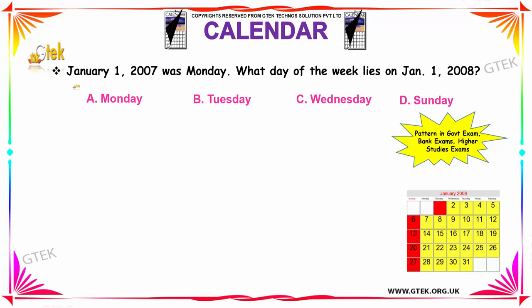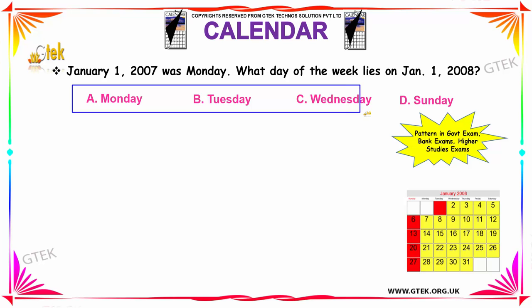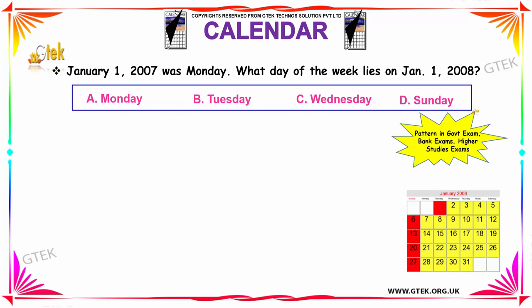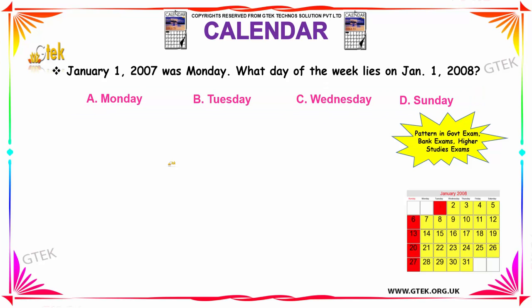Our options are: A. Monday, B. Tuesday, C. Wednesday, D. Sunday. So, what will be your answer? These patterns of questions appear in government, bank, and higher studies exams.